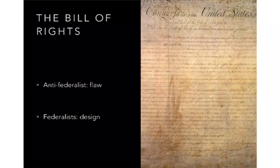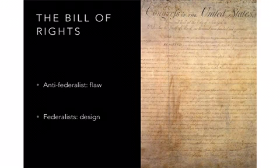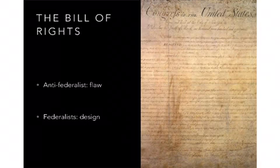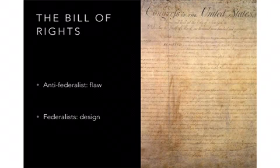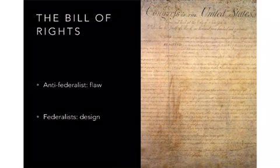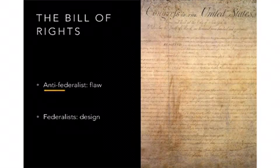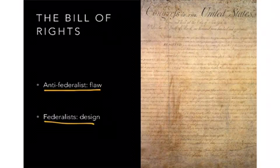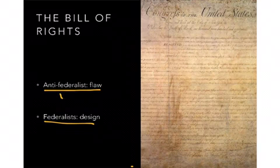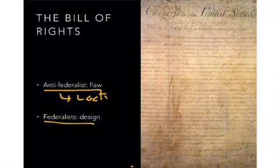Most of the civil liberties that we get come to us through the Bill of Rights. The Bill of Rights was this big collection of amendments about protecting individual freedoms and rights primarily. Early on, there were two really big views. Anti-Federalists, along with Jefferson and others, saw that the Constitution had a flaw and said the Constitution doesn't contain civil liberties — and the lack of civil liberties is a flaw.